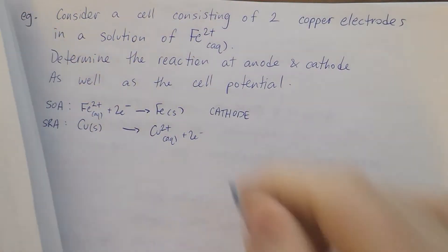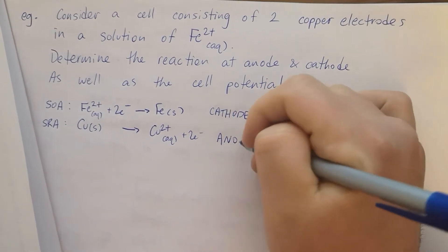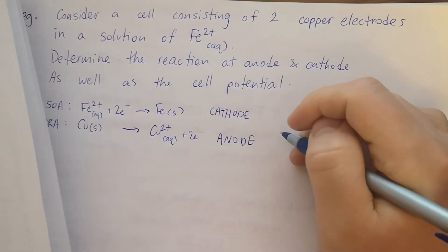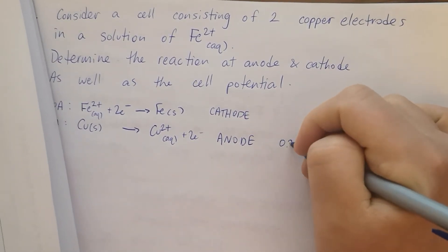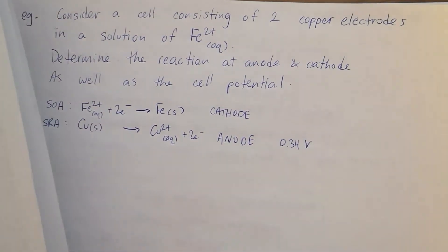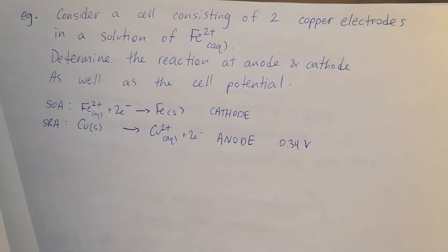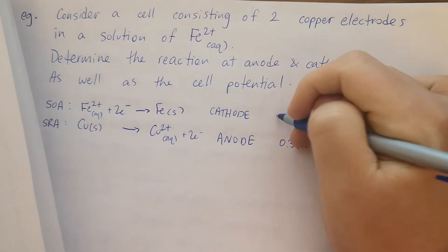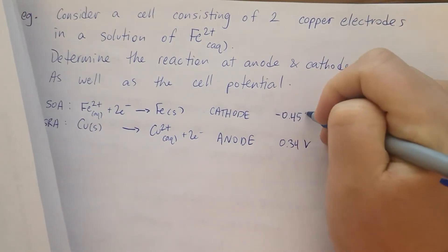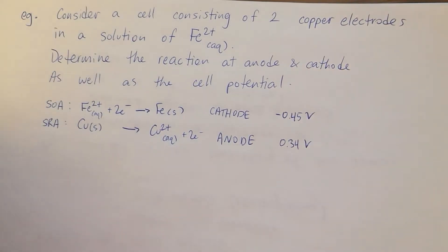And that's going to happen at the anode. In order to get our cell potential, let me write our reduction potentials here. So I just got those values from my data booklet.